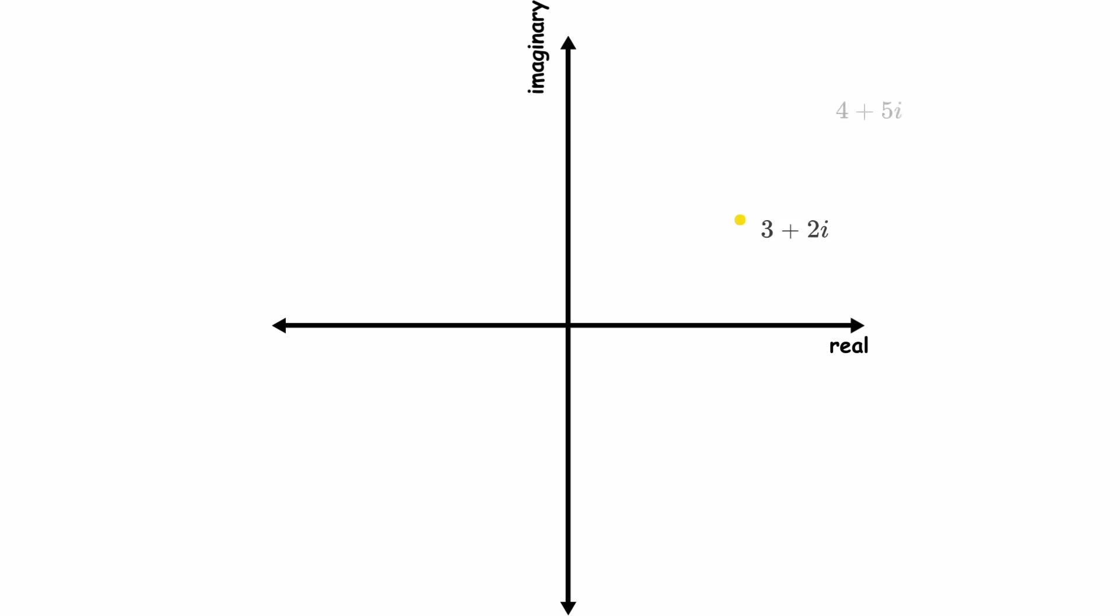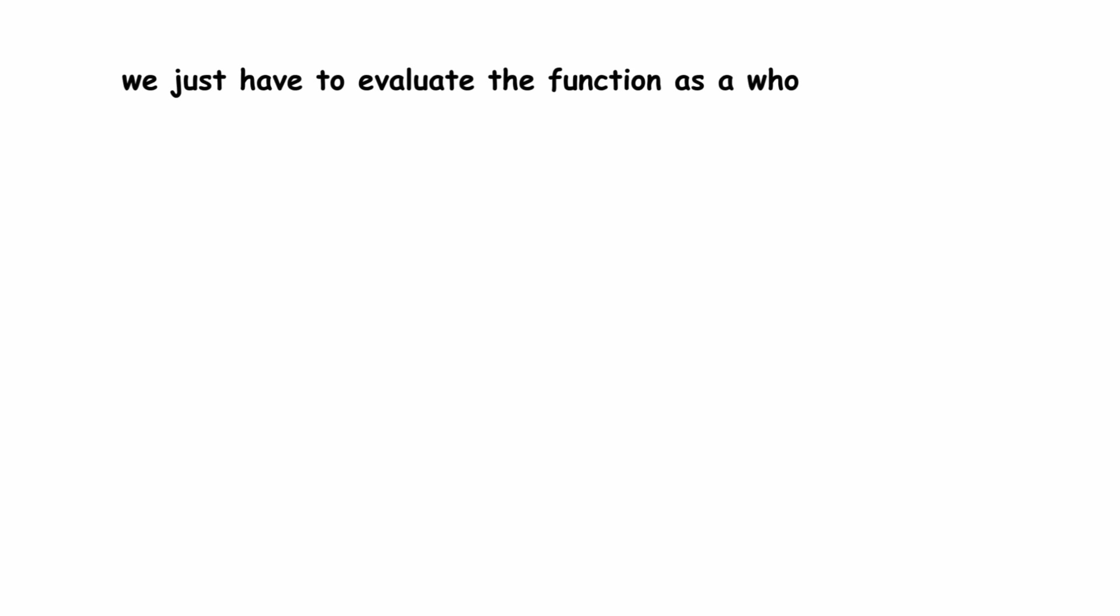Meanwhile, if we had started with a number like 4 plus 5i, that would remain the same because taking the absolute values of each part doesn't change their value. Now we just have to evaluate the function as a whole on negative 3 minus 2i. The result looks like this.